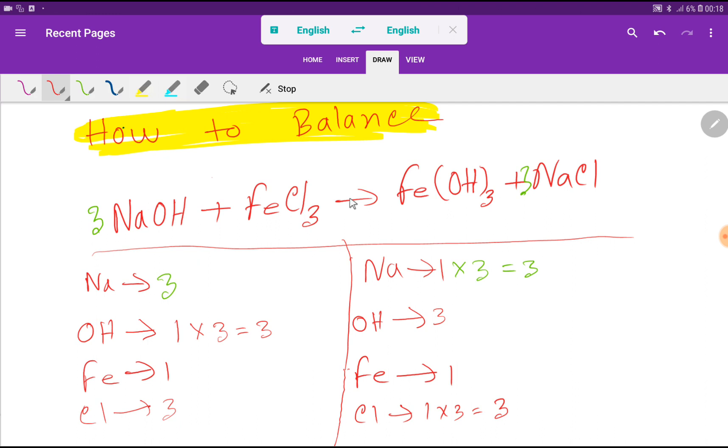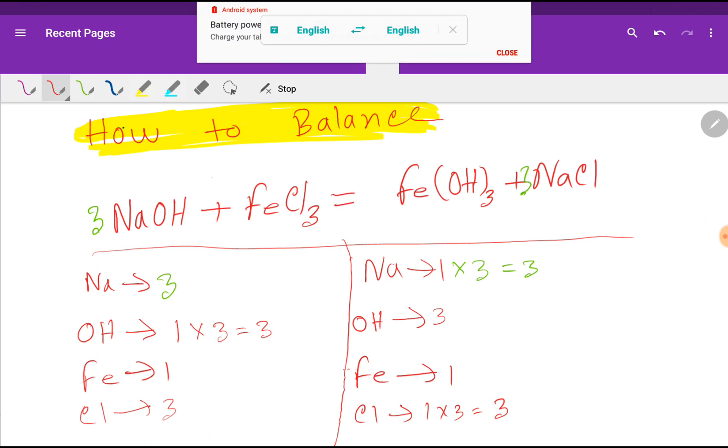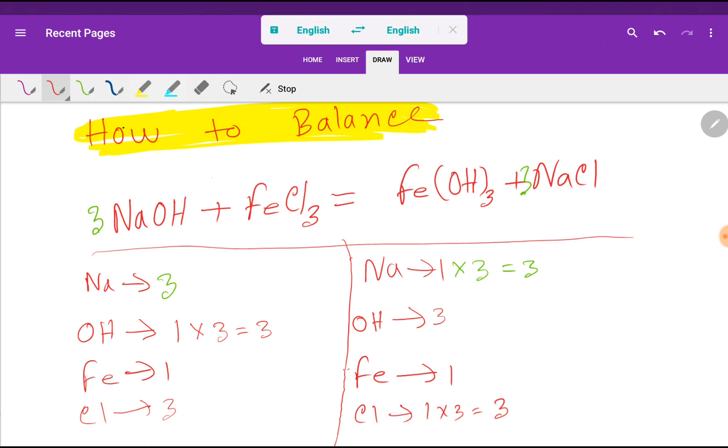At last you have to change this sign. And you have to put here equal sign. And this is the balanced reaction between sodium hydroxide, ferric chloride, then ferric hydroxide and sodium chloride.